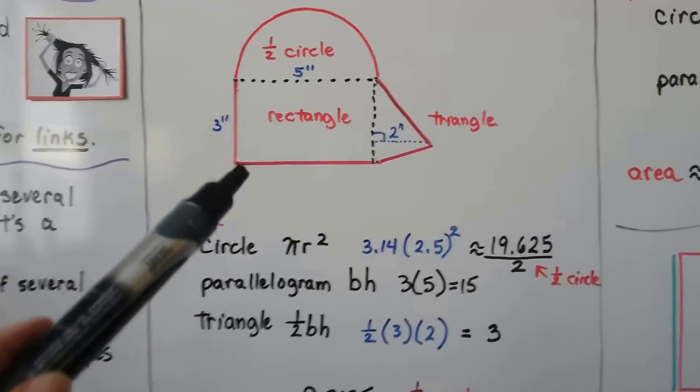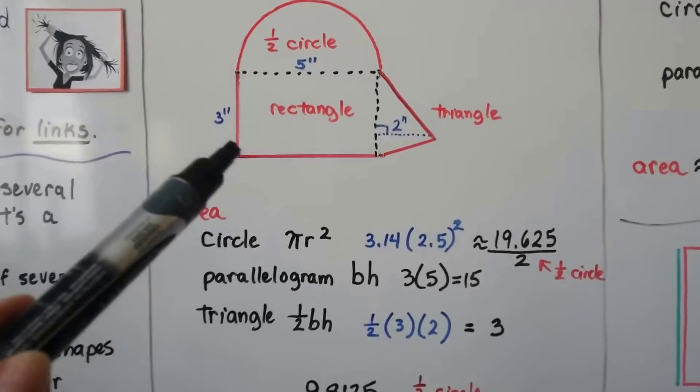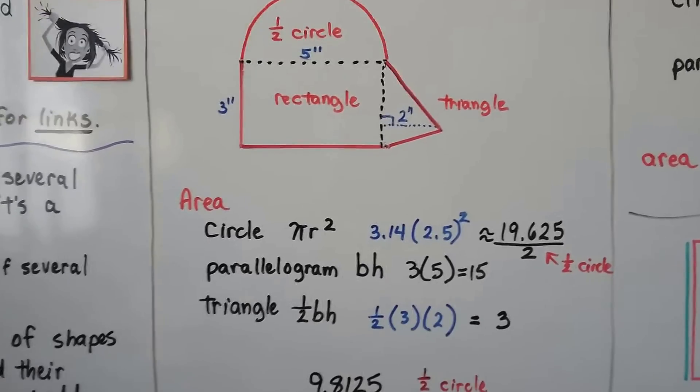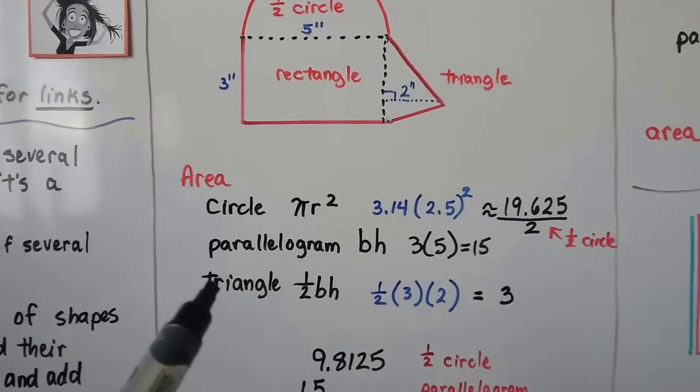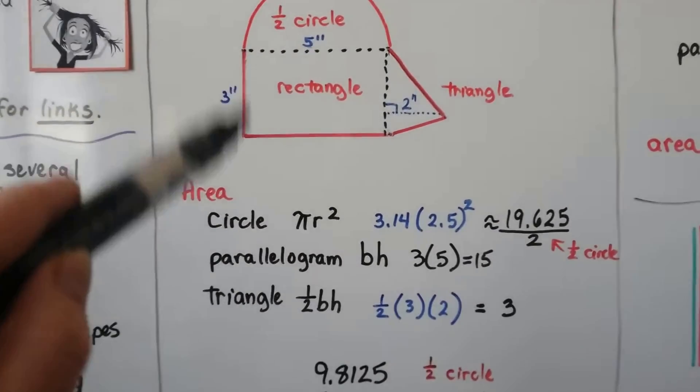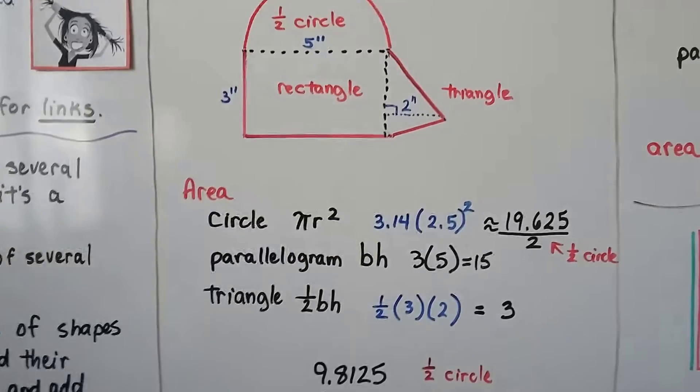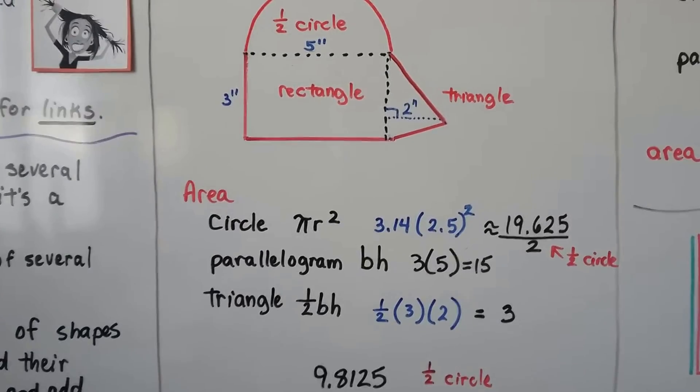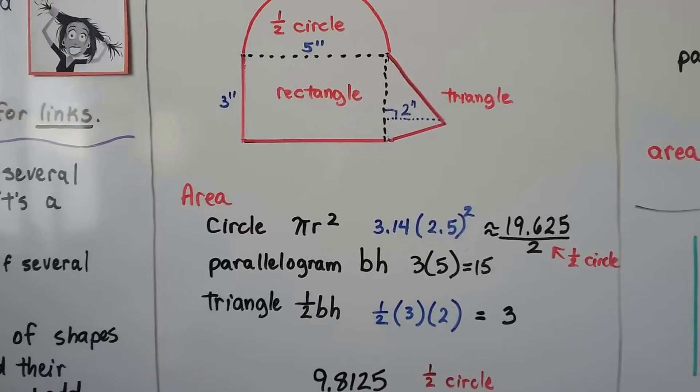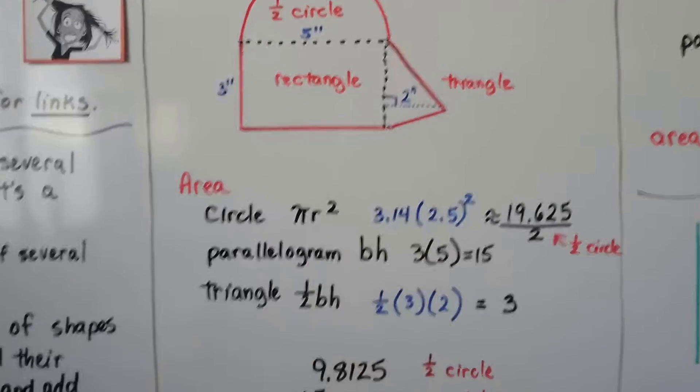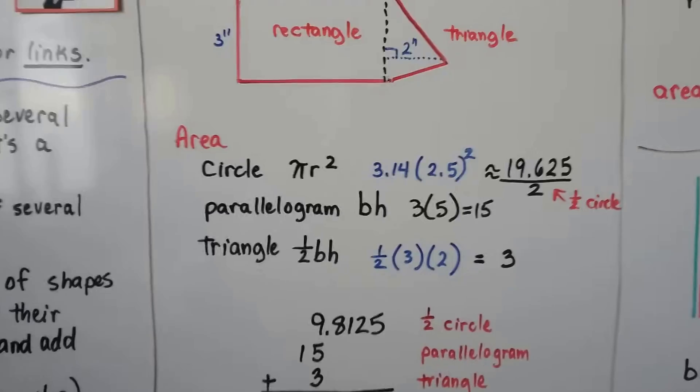For the parallelogram, the rectangle, we just do base times height, length times width. That's going to be 3 times 5, that's 15. For the triangle, right here, the base is 3. We take this measure here and use it for the base. Half base height would be half times 3 times 2, because the height is 2. That would be half of 6, or it would be 3.